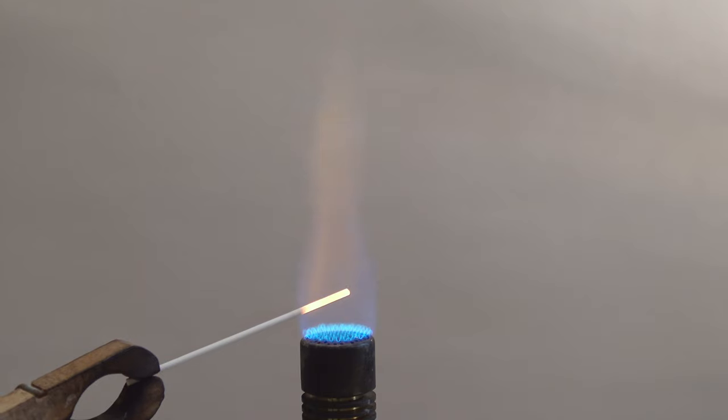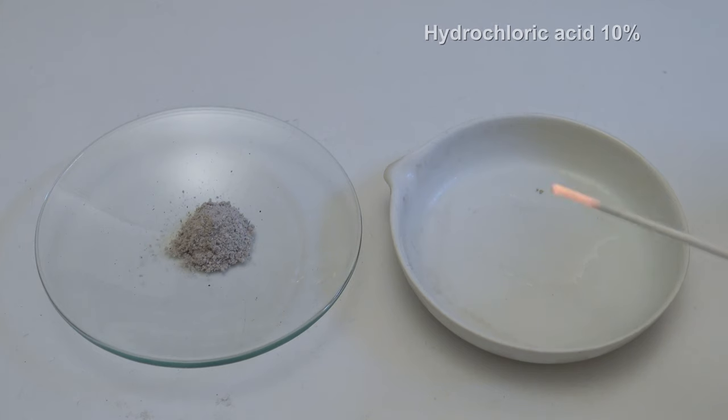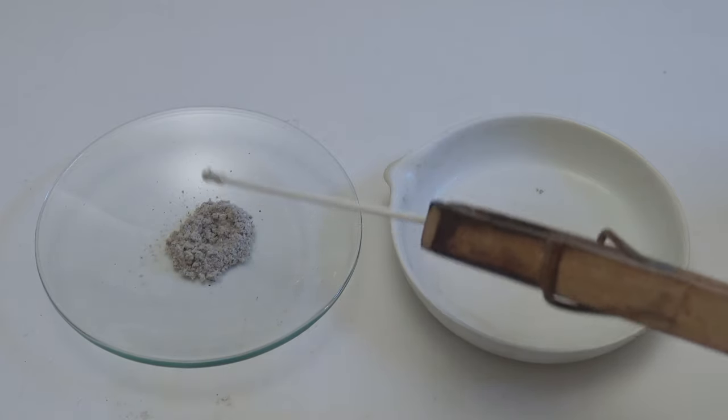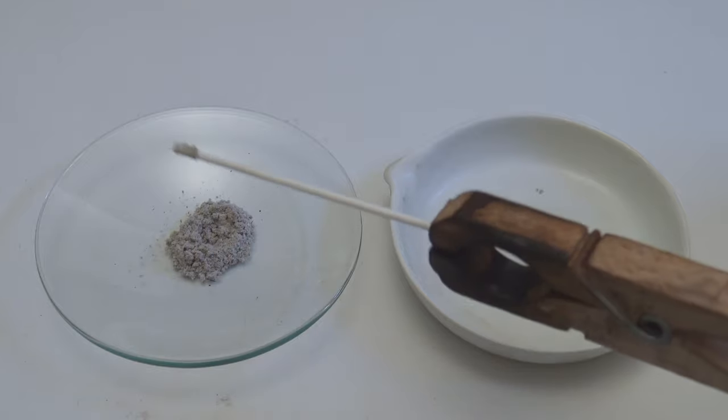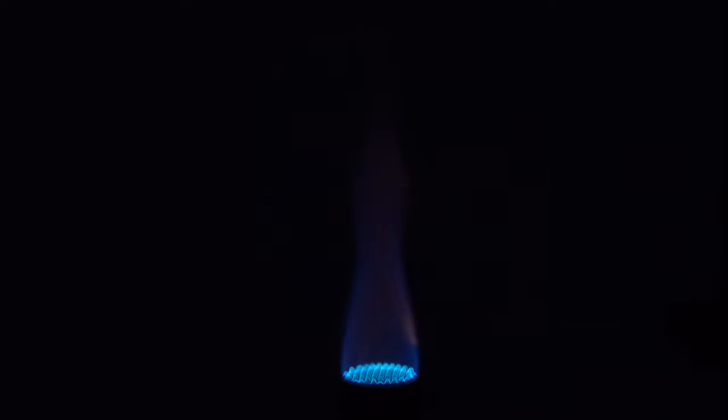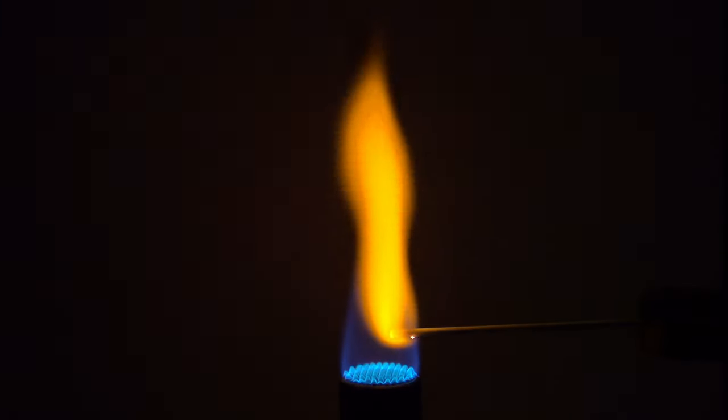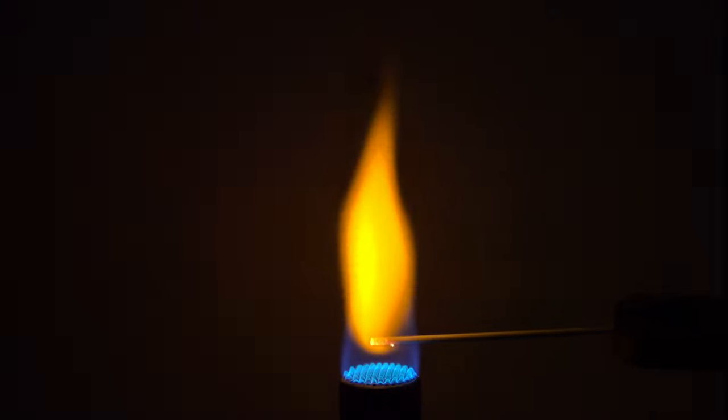Next, the stick is dipped into 10% hydrochloric acid and then into the sample. It is then held into the flame of the Bunsen burner.